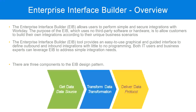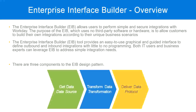Any integration will have three steps. First, we have to get the data from somewhere. The second step would be to modify the data, translate the data, or transform the data into a format expected by the recipient. The third step will be to send the data to the recipient — deliver the data. When we create an integration using EIB, we will see these three steps: get data, transform data, deliver data. These are the three components in an EIB design pattern.